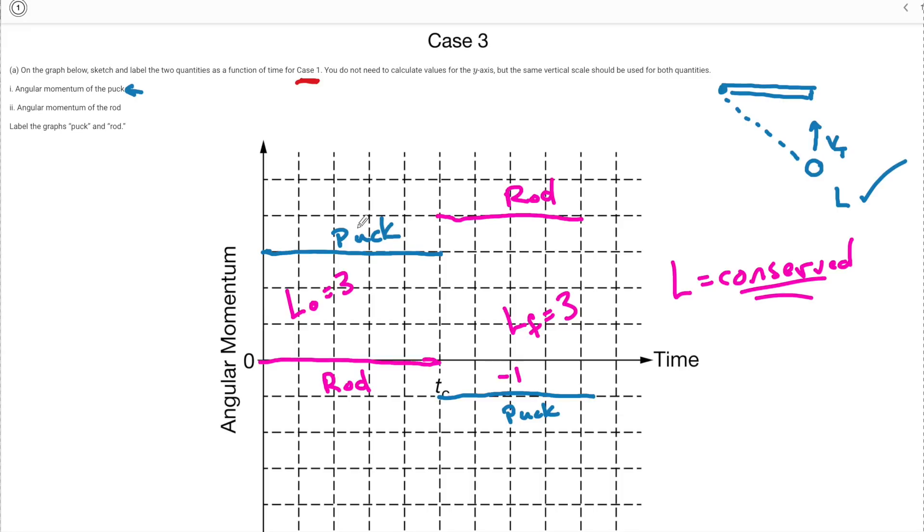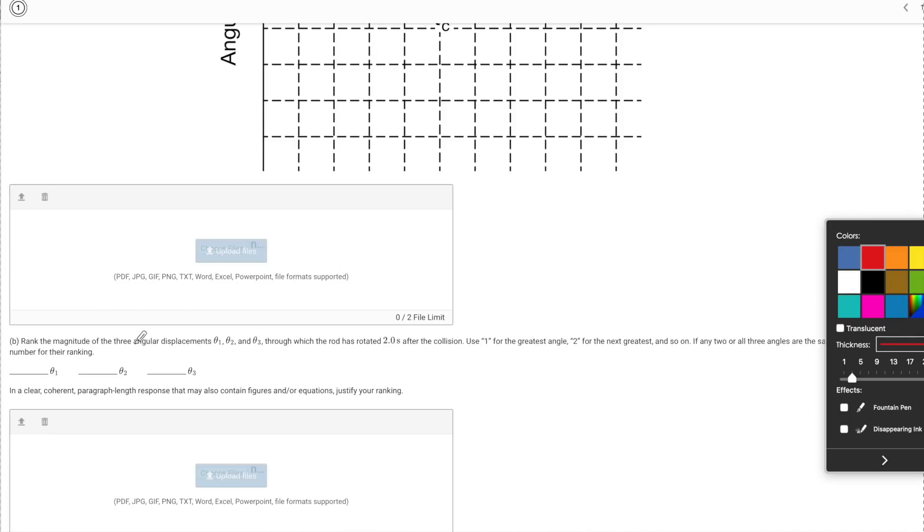So this is the graphs for the puck and the rod up to the collision point and then after time goes on. So in part B they want to know the angular displacement theta of the rod and how far it's rotated after two seconds after this collision has taken place. So they want to know what in fact is going to happen here with the rods.